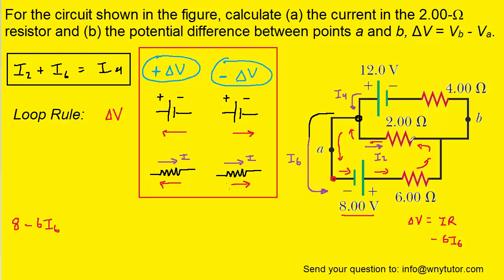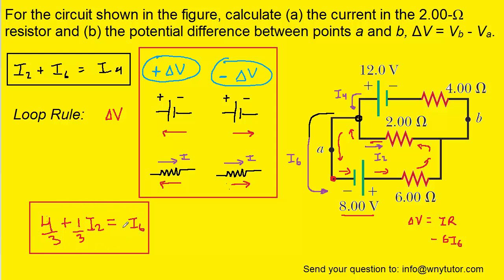Continuing counterclockwise through the loop, we encounter another resistor. This time we are moving against the direction of current I2, which is a positive potential change, giving us positive 2·I2. We return to the starting point and set the loop equation equal to zero: 8 − 6·I6 + 2·I2 = 0. Solving for I6 by moving the 6·I6 term and dividing by 6, we get I6 = 1/3·I2 + 4/3. We hold on to this equation for later.